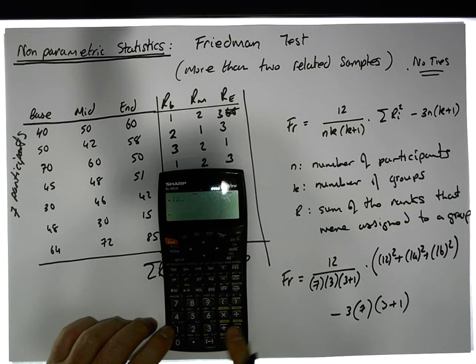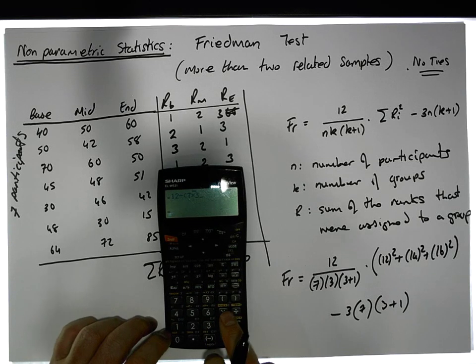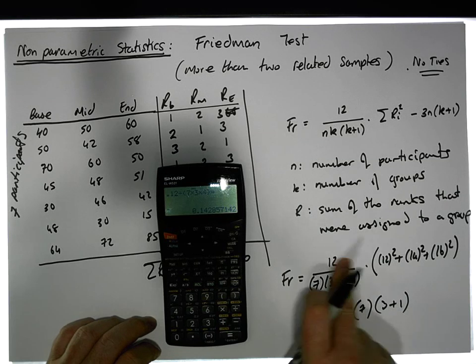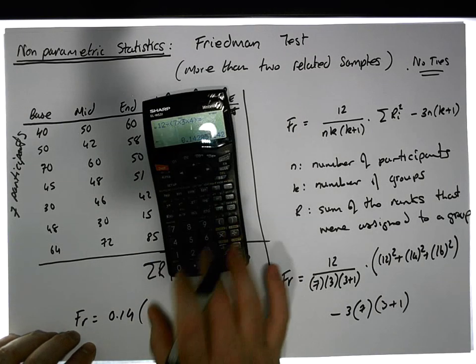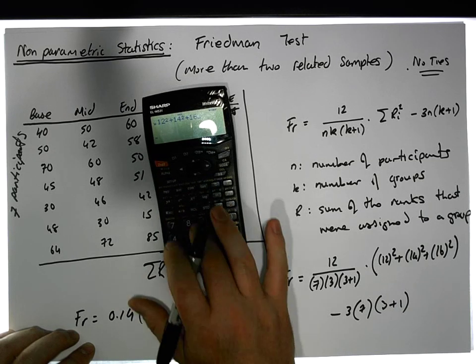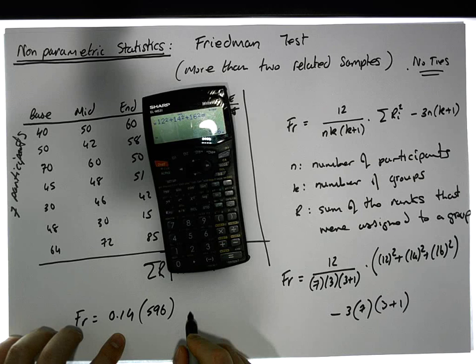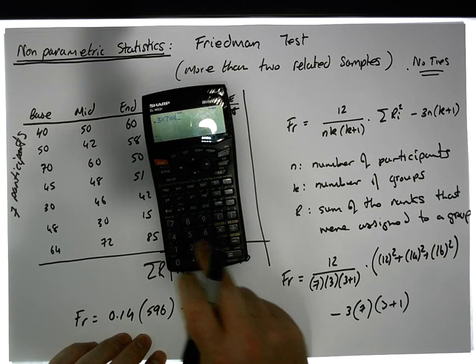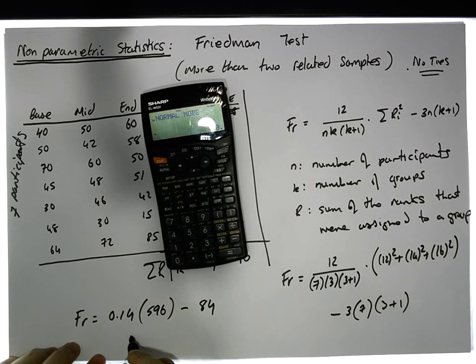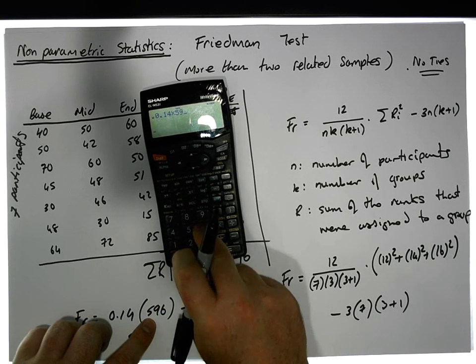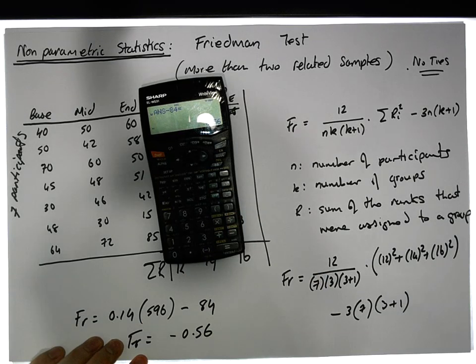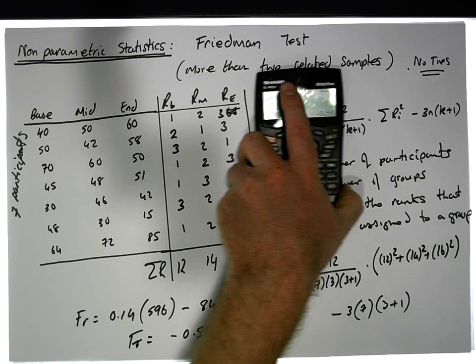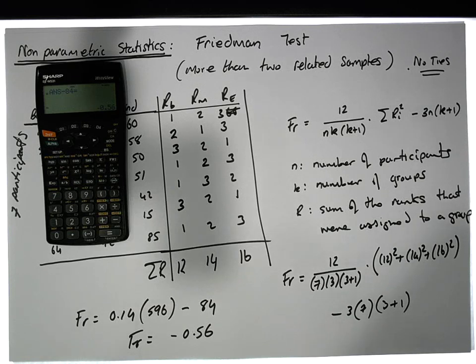This is a bit of calculator work. We have 12 divided by 7 times 3 times 4 gives us this factor here, which is 0.14. So we end up with Fr equals 0.14. This factor here is 12 squared plus 14 squared plus 16 squared, which gives us 596, minus this value here, which is 3 times 7 times 4, which gives us minus 84. So our Fr, our Friedman test statistic, is 0.14 times 596 minus 84, which gives us a value of minus 0.56. There was no ties there, which gives us 0.56 as the test statistic.